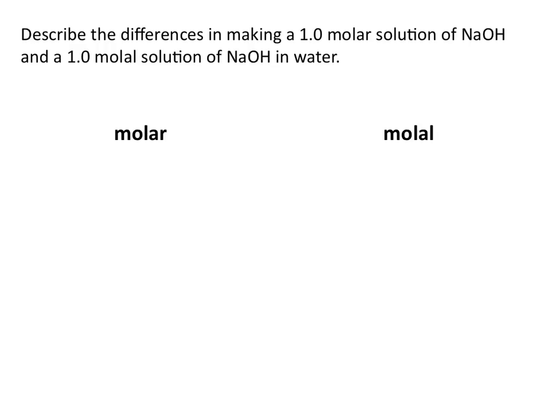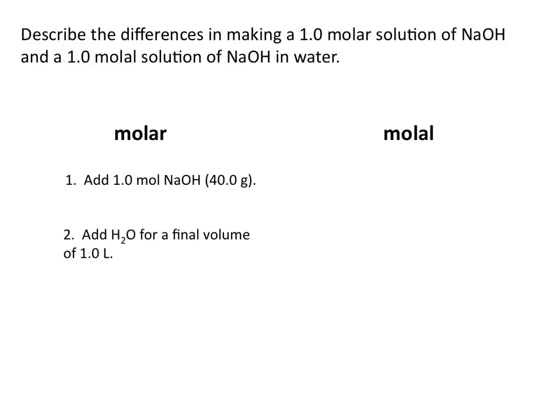Describe the differences in making a one molar solution of NaOH and a one molal solution of NaOH. To simplify things, I'm going to assume that we are making approximately one liter of each solution. To make a one molar solution of NaOH, you would add one mole of NaOH, or 40 grams, and then add water so that you reach a final volume of one liter, because molarity is moles per liter. So we want one mole of NaOH per every one liter of solution, giving a final volume of one liter after adding the NaOH.